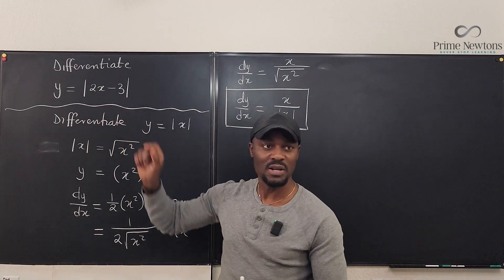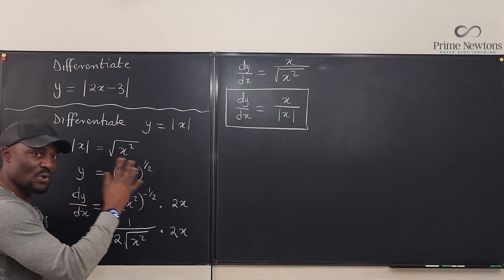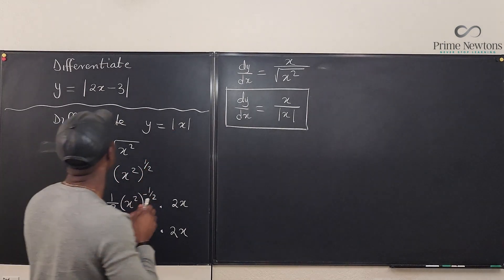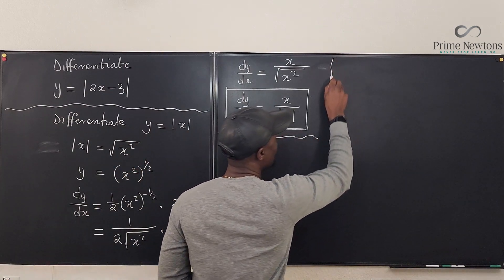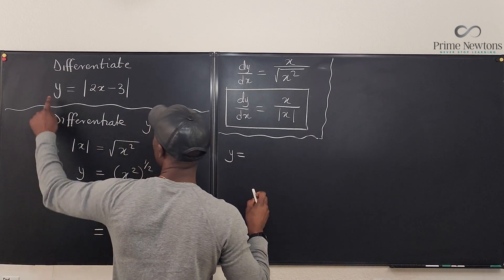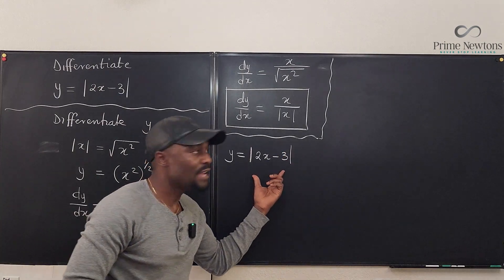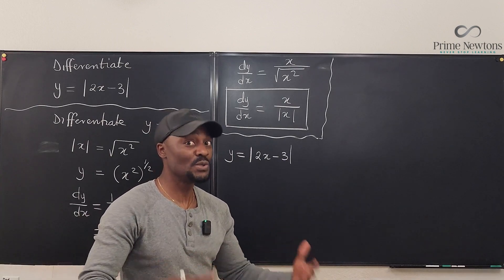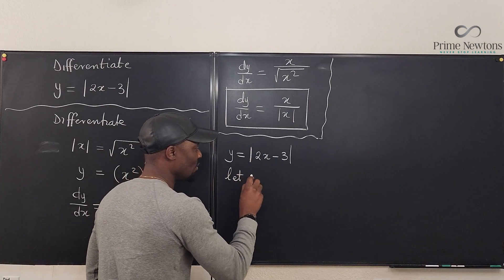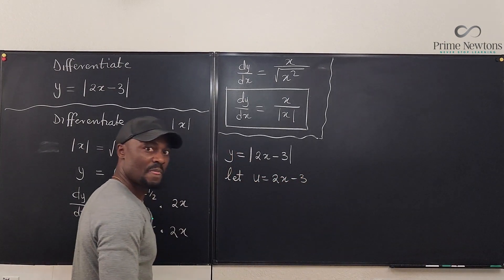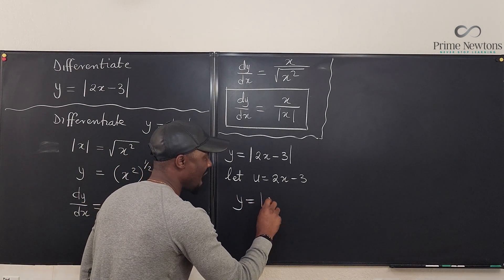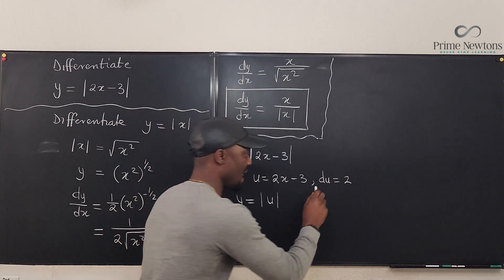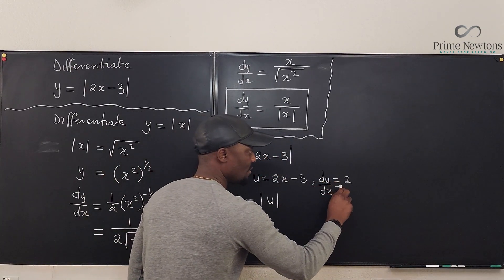Now let's differentiate y equals the absolute value of 2x minus 3. Don't just copy the answer pattern and substitute — it won't work directly because there's more than a single term inside. Since this is more complicated, we'll use a u-substitution. Let u equal 2x minus 3. We want to differentiate y equals the absolute value of u. Then du/dx equals 2.